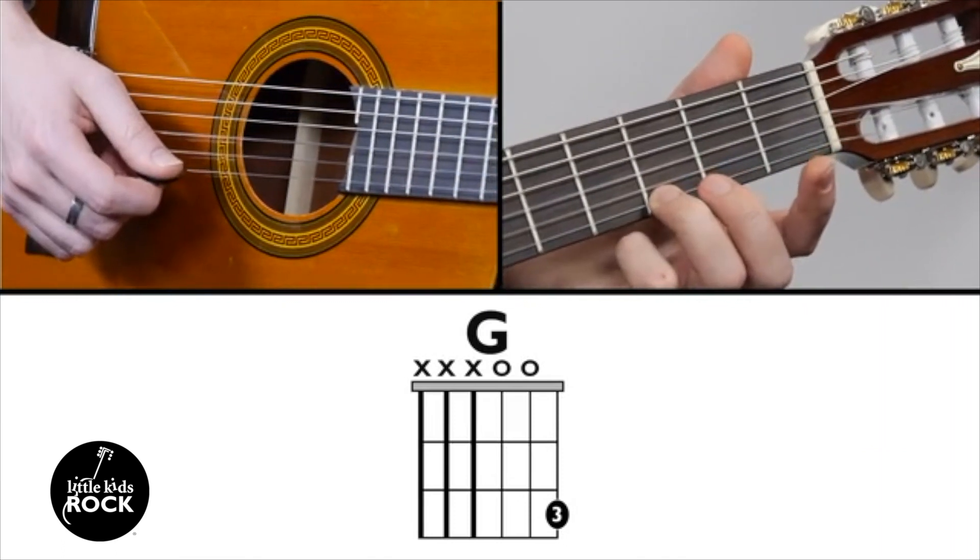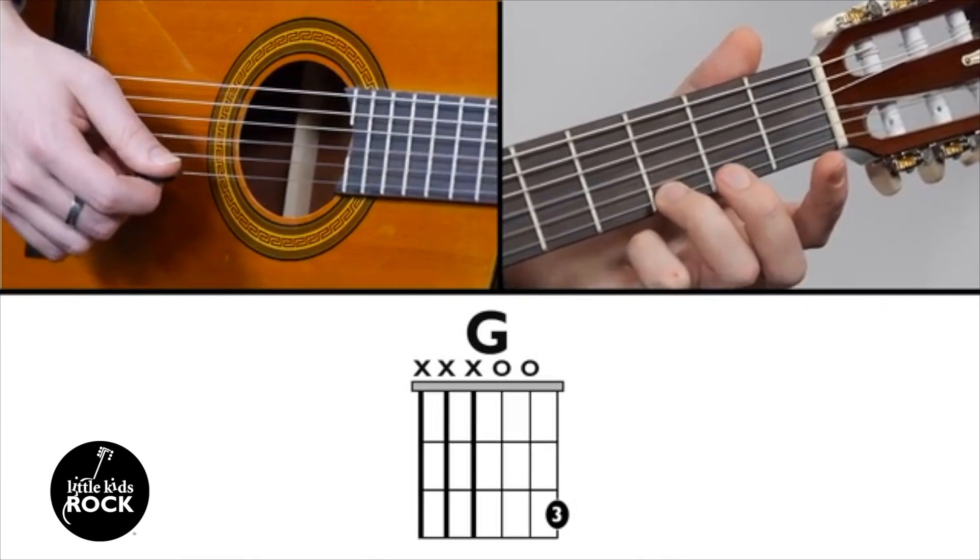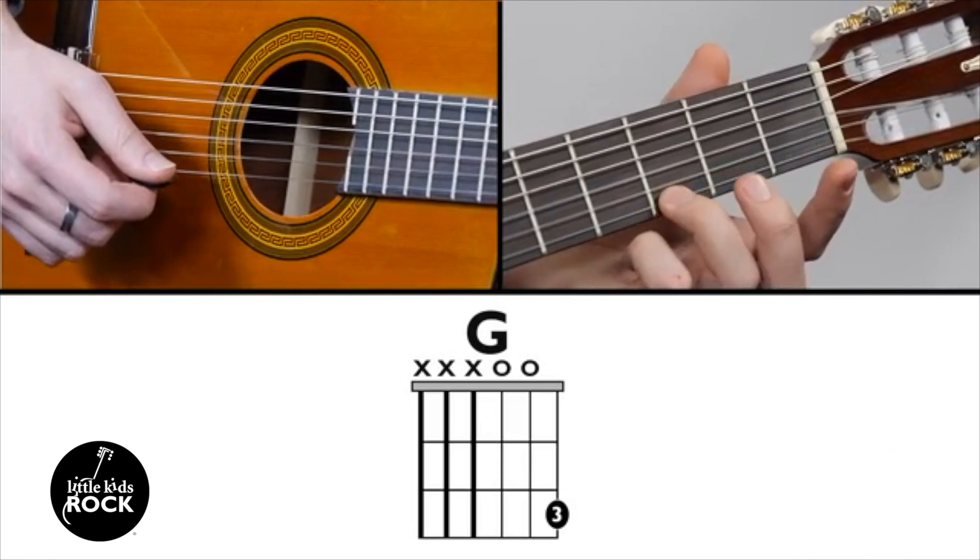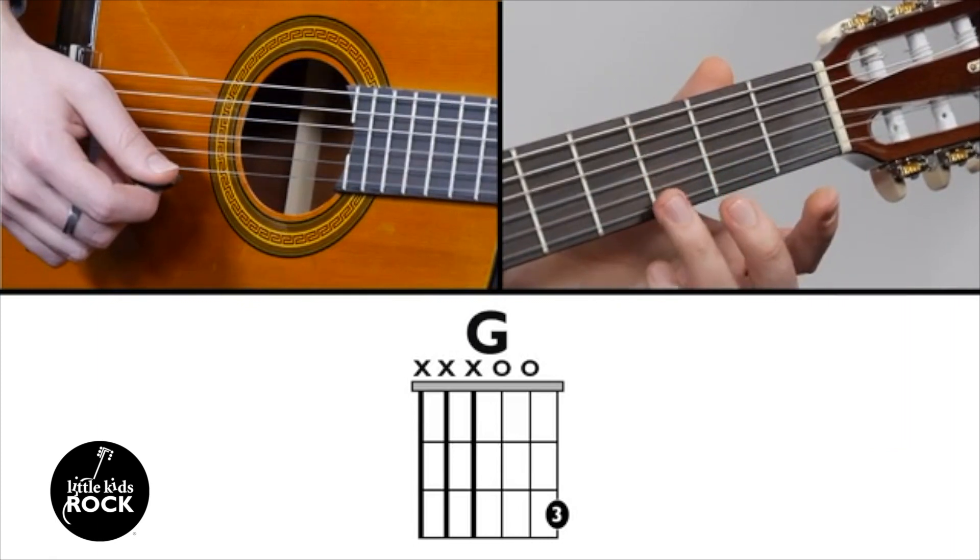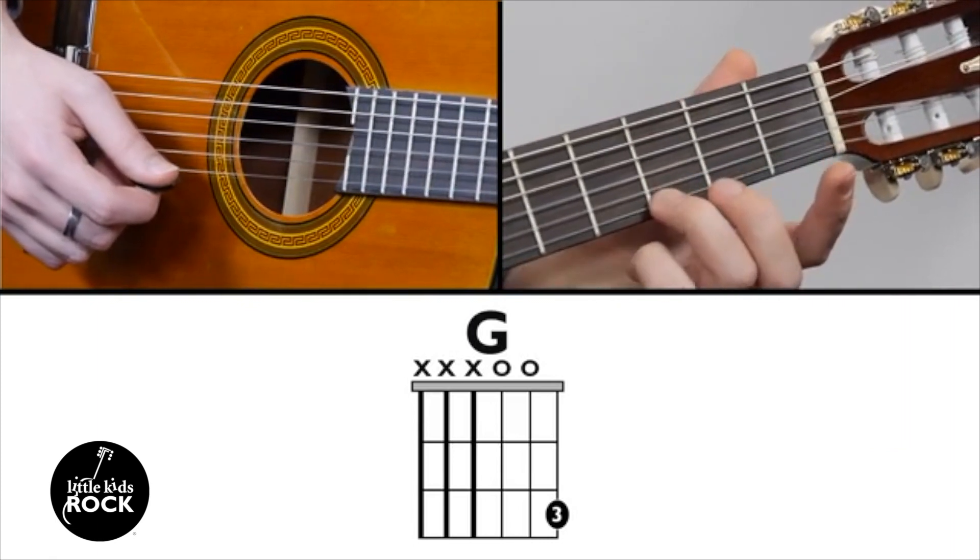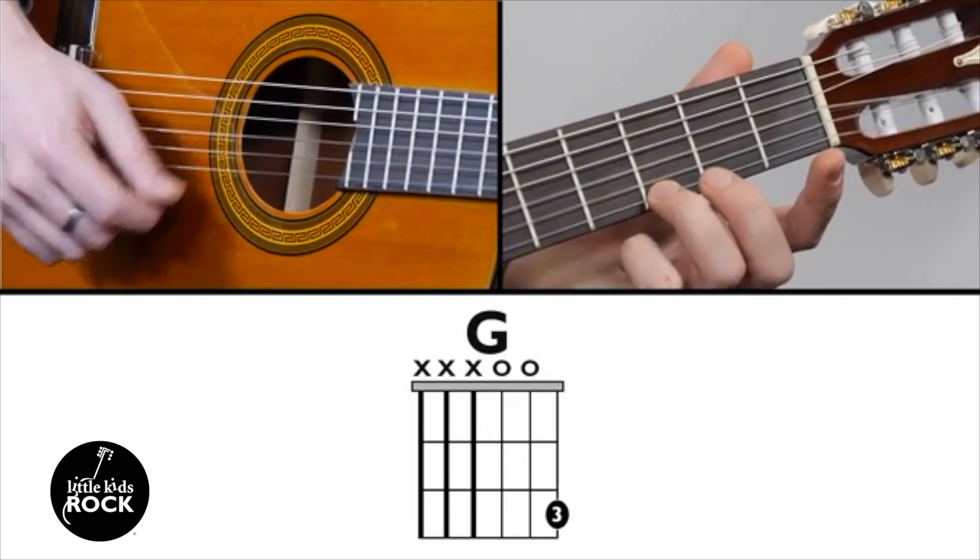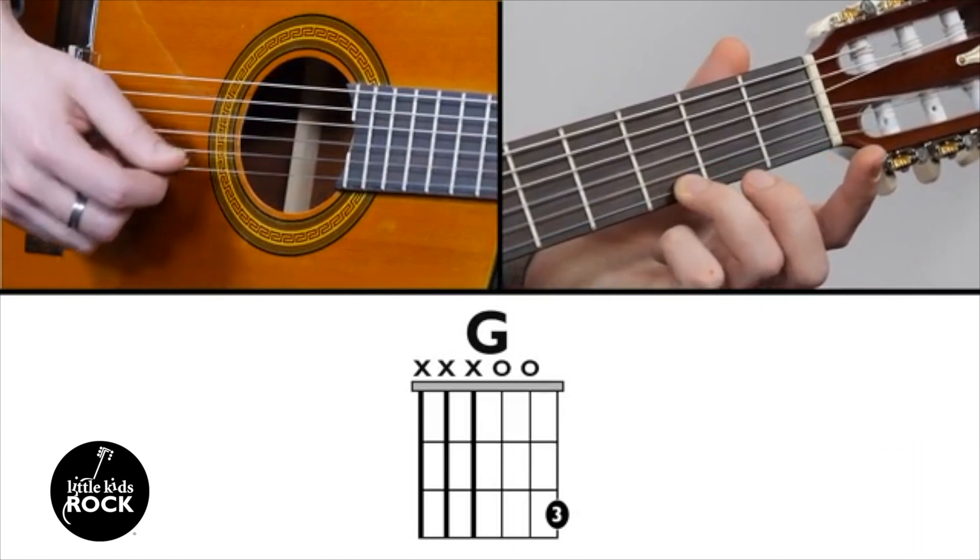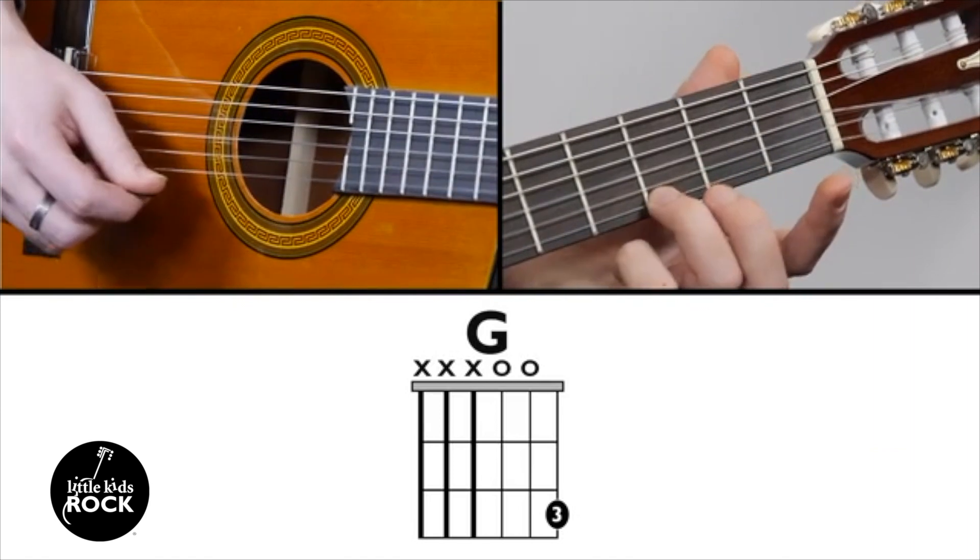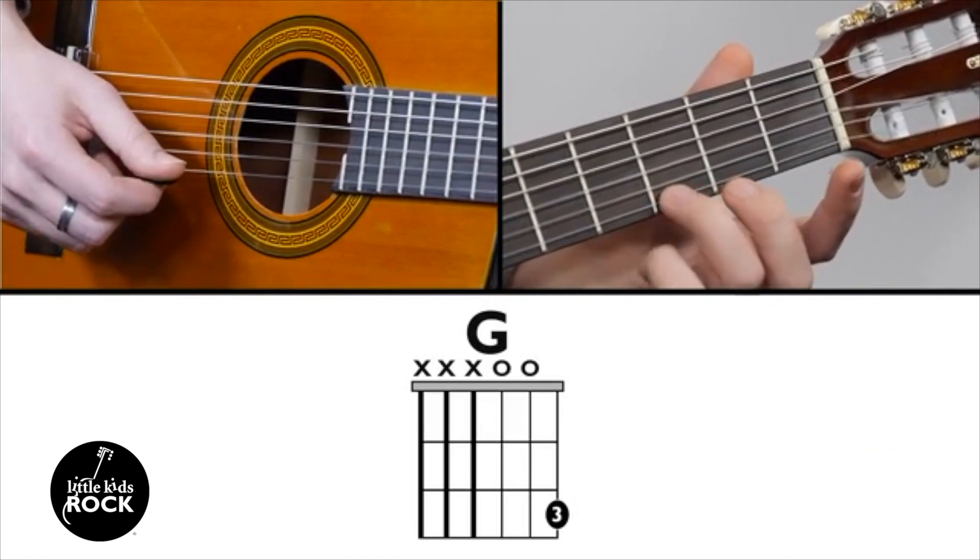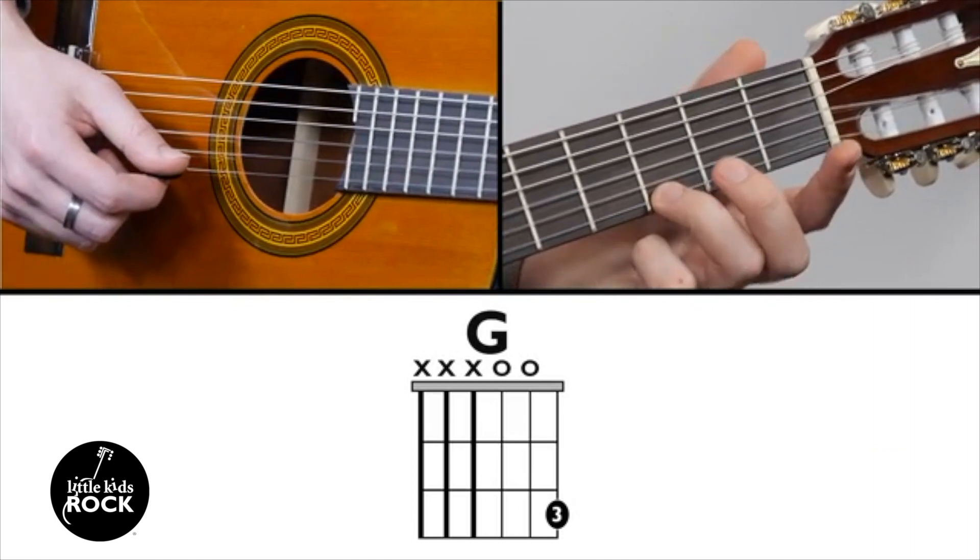Another thing to keep in mind is notice how my finger is close to the fret wire, this metal fret wire. My finger is close to that. That makes it easier. If I backed it up here, it would get harder. See that? So we got our finger close to that fret wire, pressing hard enough to make a sound.